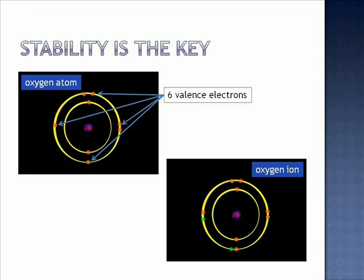According to the octet rule, atoms will transfer or share electrons so that they have the electron configuration of a noble gas. This means that they will attempt to have eight electrons in their valence level. Atoms react in this manner to become more chemically stable. Particles that are stable are less likely to react with other substances and so have a lower chemical reactivity.